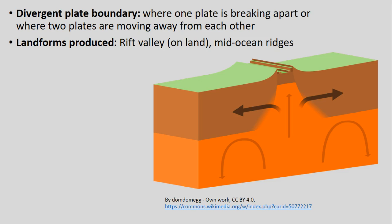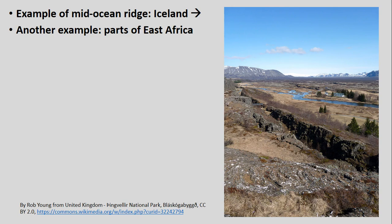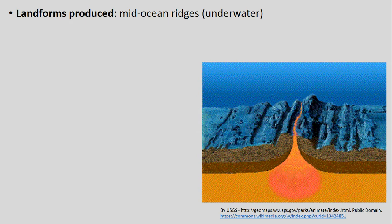At divergent plate boundaries, one plate is essentially breaking apart — two plates moving away from each other. This produces landforms like rift valleys on land, where the land is splitting apart, and mid-ocean ridges under the ocean. An example of a mid-ocean ridge exposed above ground is in Iceland, which has a whole national park tied to this splitting. Other examples include rift zones in East Africa, and mid-ocean ridges underwater where magma wells up, cools, and builds up almost mini mountain ranges beneath the ocean.